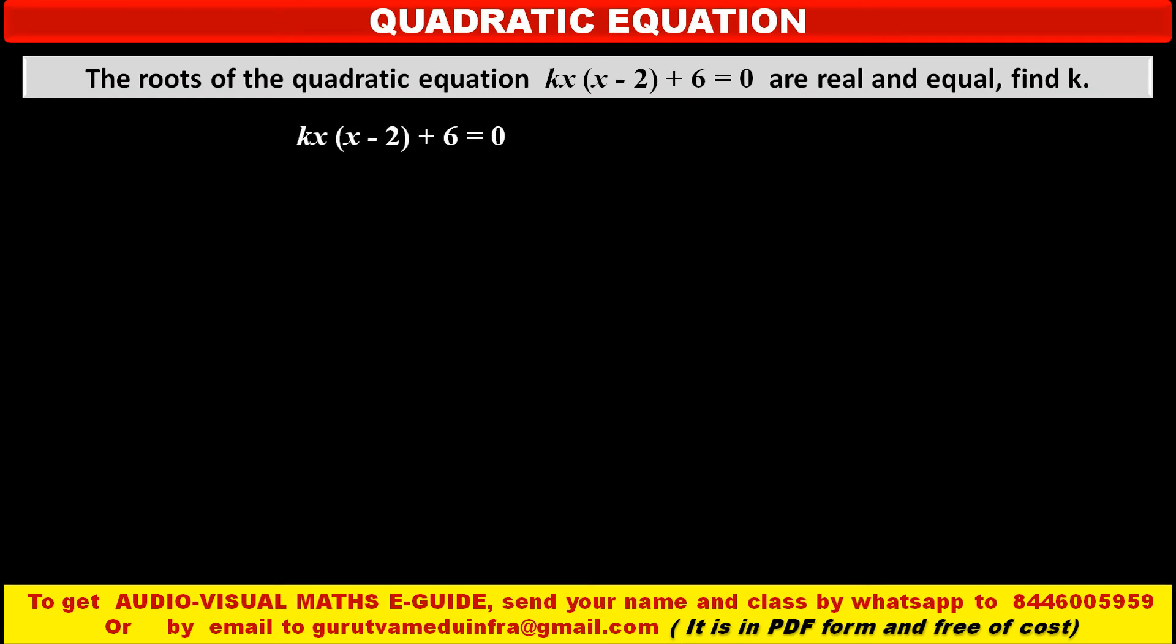In this problem, the given quadratic equation is kx into x minus 2 plus 6 is equal to 0. And it is given that the roots of this equation are real and equal. We have to find k. First, we have to change this equation like its general form. So by solving this, we get kx square minus 2 into kx plus 6 is equal to 0.